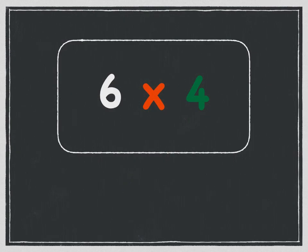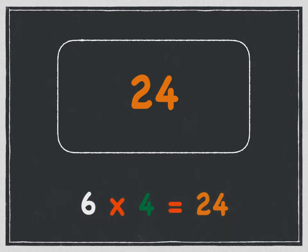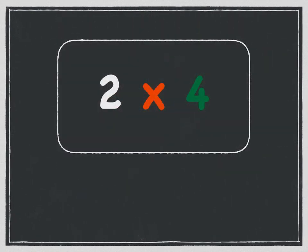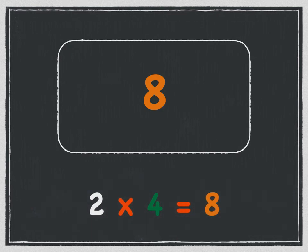Six times four is twenty-four. Six times four is twenty-four. Two times four is eight. Two times four is eight.